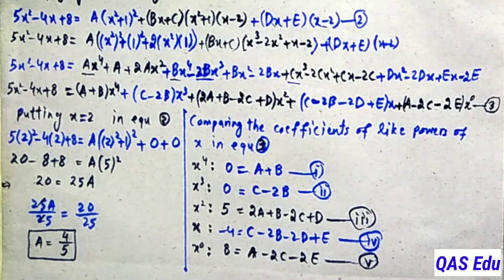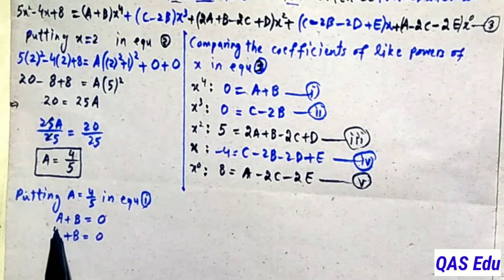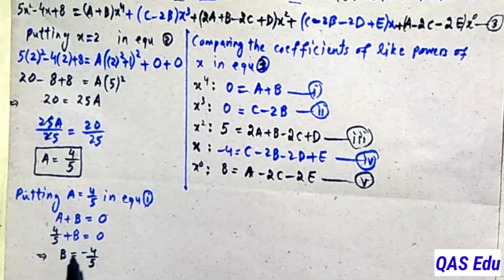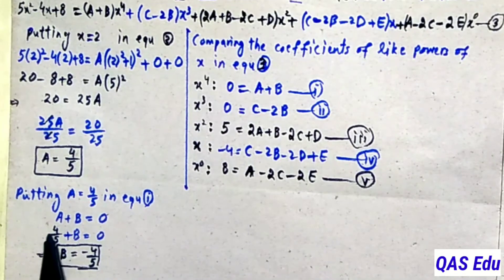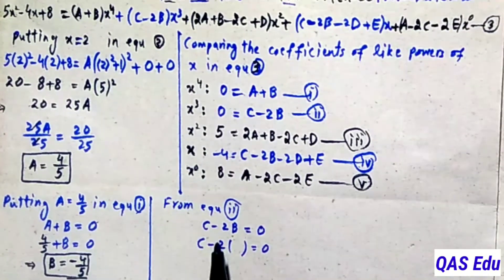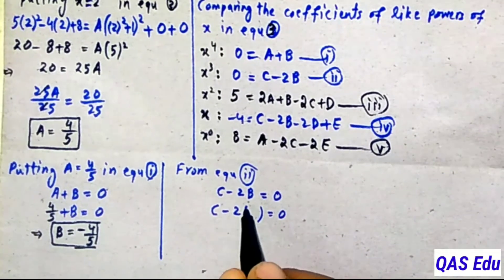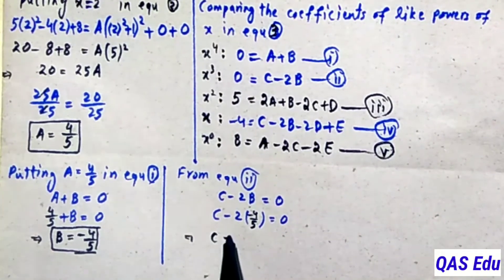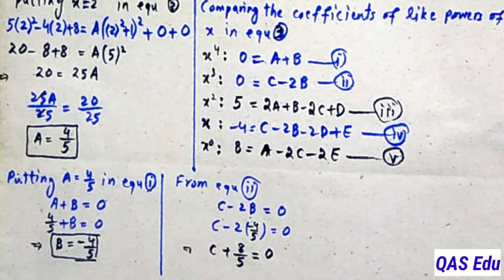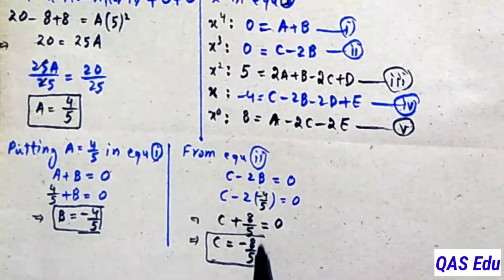Now A is known, so we put A equal to 4 over 5 into equation number 1: A plus B equals 0, so 4 over 5 plus B equals 0, giving B equals minus 4 over 5. Then from equation number 2, C minus 2B equals 0. Substituting B equals minus 4 over 5: C minus 2 times minus 4 over 5 equals 0, so C plus 8 over 5 equals 0, giving C equals minus 8 over 5.